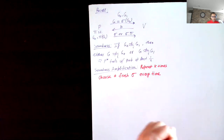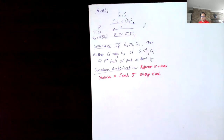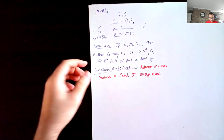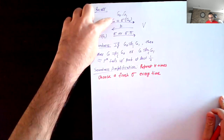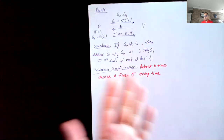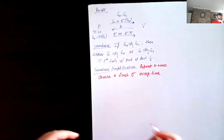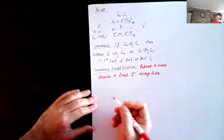What happens if you don't use a new sigma every time? Then the zero knowledge property is trivially violated. If the same sigma is used twice, the verifier can send challenge b=0 and then also ask for b=1, learning the isomorphism between G and G0 as well as G and G1. This lets you compute the permutation between G0 and G1, so you essentially learn the witness.